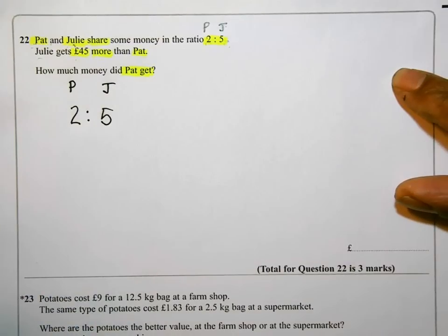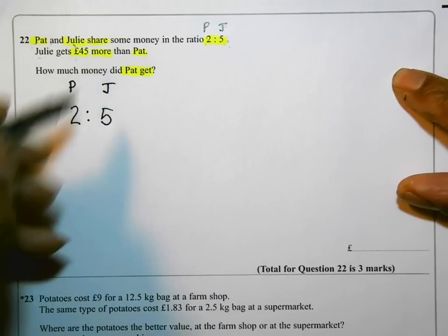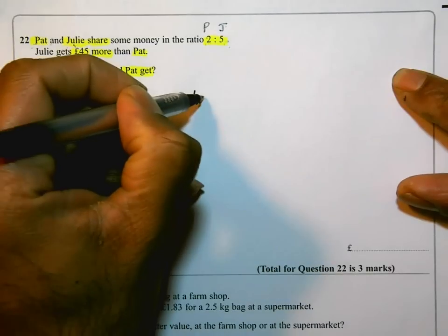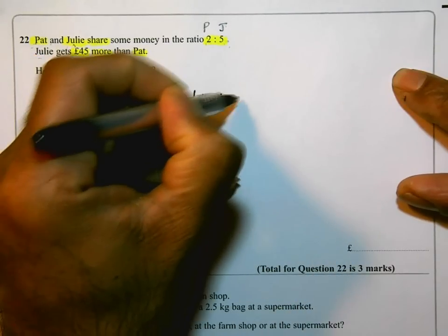However I shared this, Julie is going to get 5 parts and Pat is going to get 2 parts. Julie gets £45 more than Pat, but from what we just saw, Julie is going to get how many more parts?